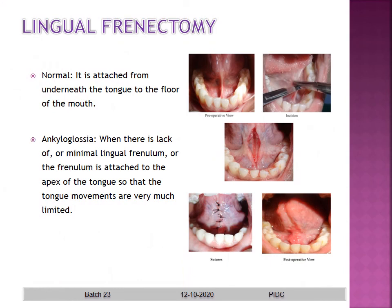For lingual frenotomy, in normal anatomy the frenum is attached from underneath the tongue to the floor of the mouth. In ankyloglossia, there is a minimal lingual frenum attached to the apex of the tongue, severely limiting tongue movement. Frenotomy can be performed by placing a hemostat and cutting with a scalpel above and below to open and relieve the frenum for the patient.